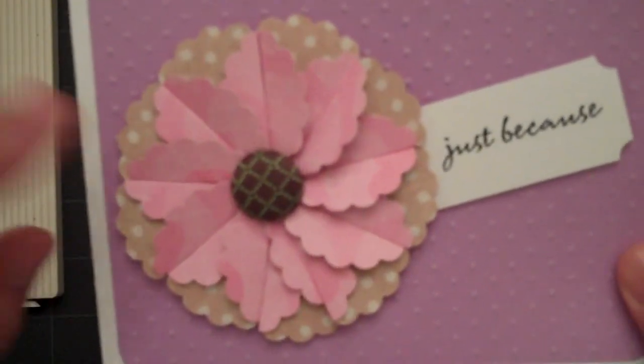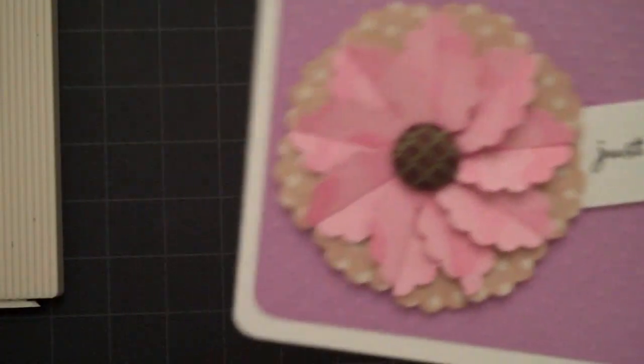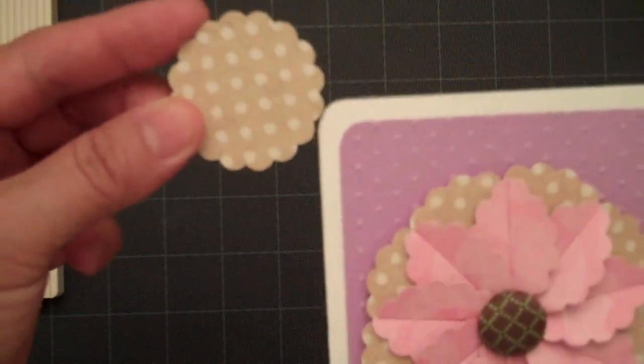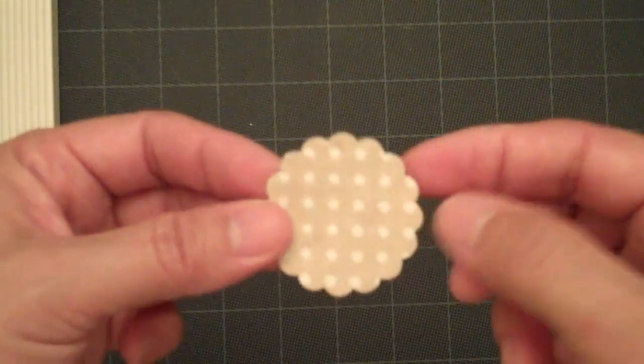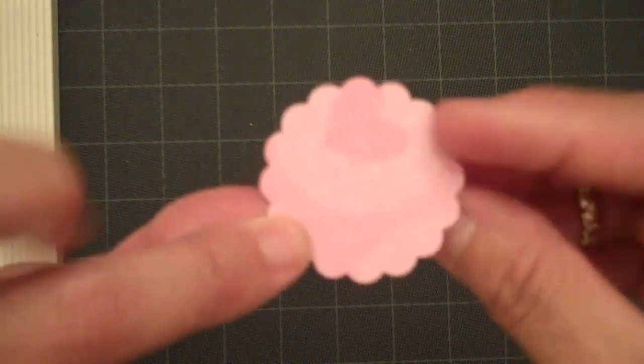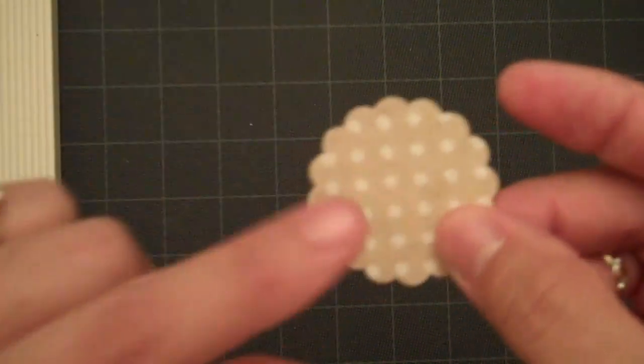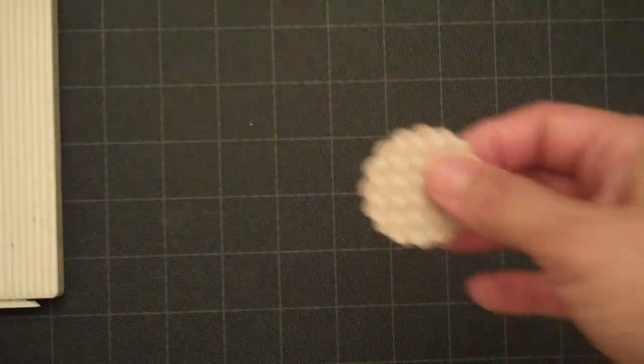You will need to punch out nine of the one and a half inch scallop circles. The paper that I used has a double sided card stock because you will be seeing both sides.